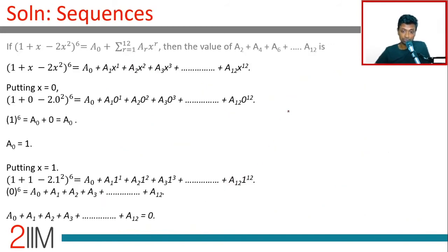Brilliant, we are through! We know that A₀ + A₁ all the way till A₁₂ = 0, and we know that A₀ - A₁ + A₂ - A₃ all the way till A₁₂ = 64.